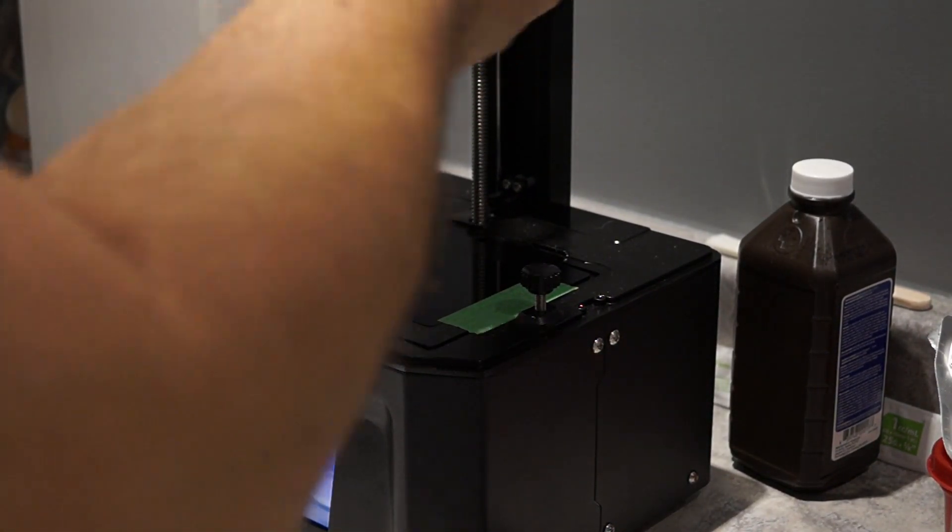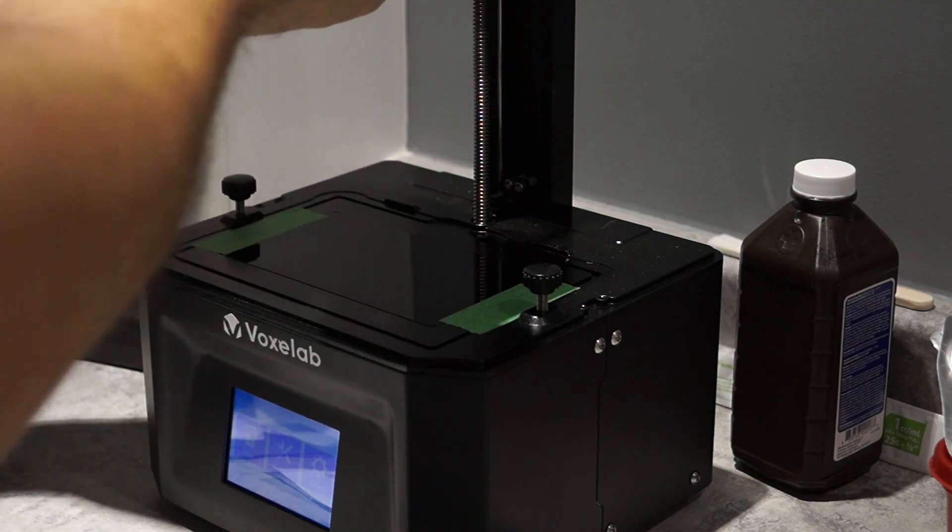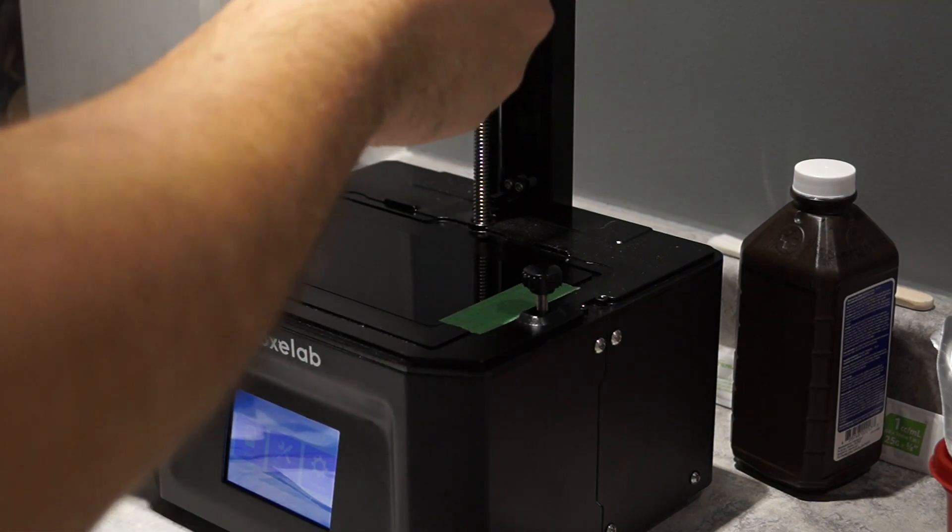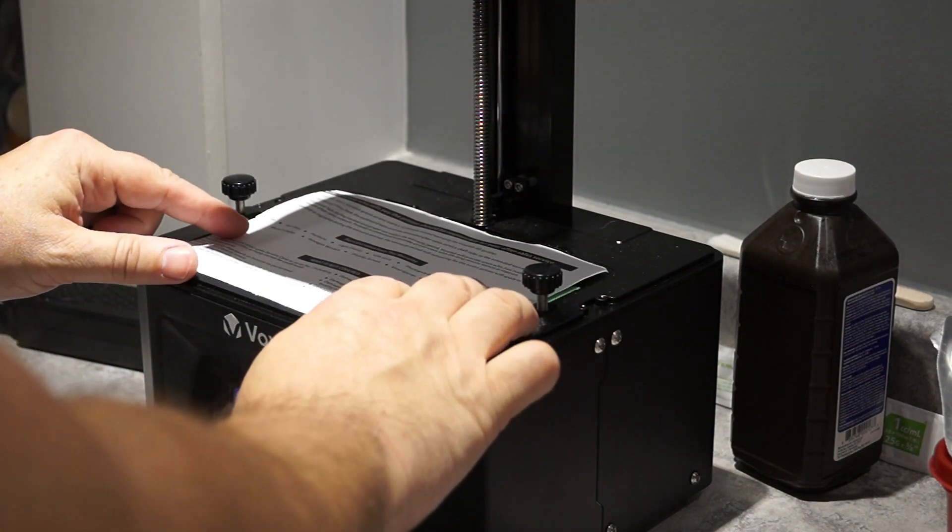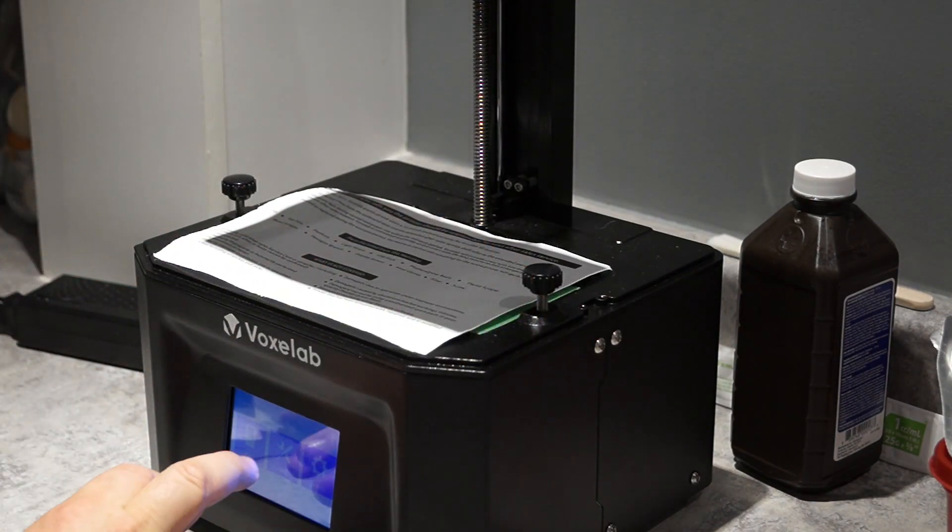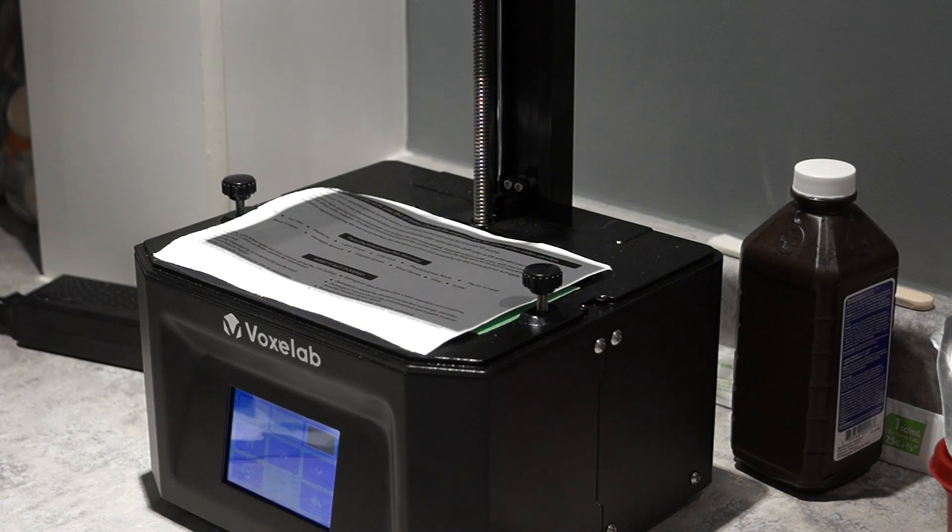What I'm doing here is loosening the screws on the build plate so that when I hit the home axis, it'll actually be loose. If you have any experience on FDM printers and other types of filament printers, leveling a bed is a pain. To level the bed on this is super easy.